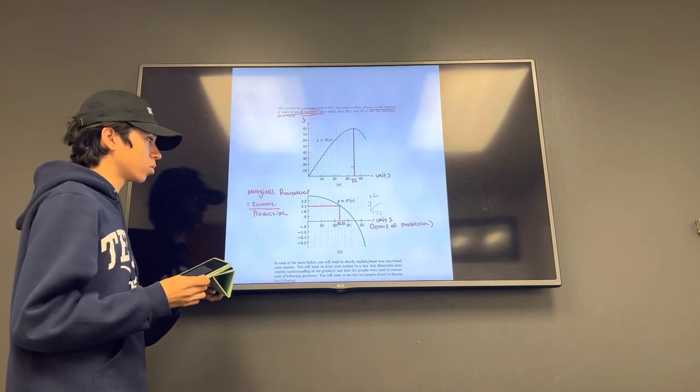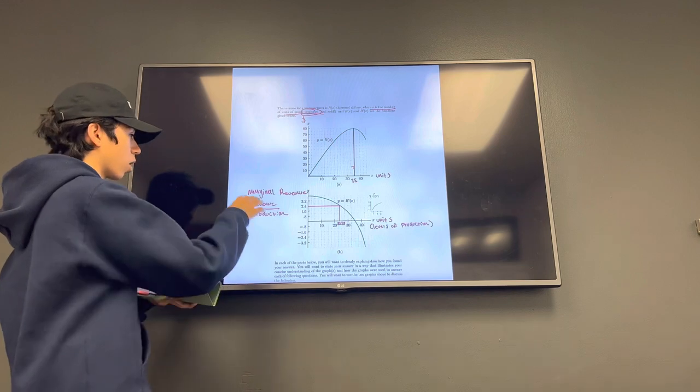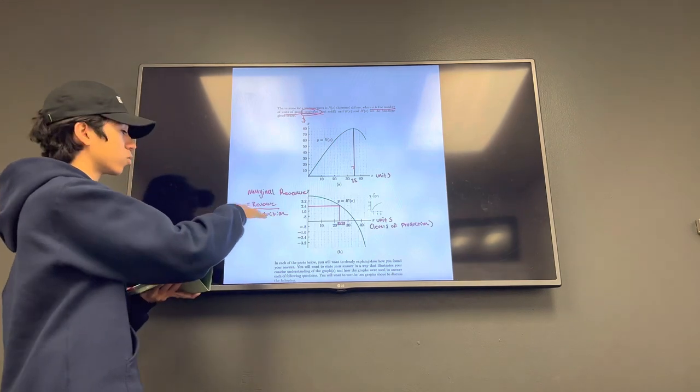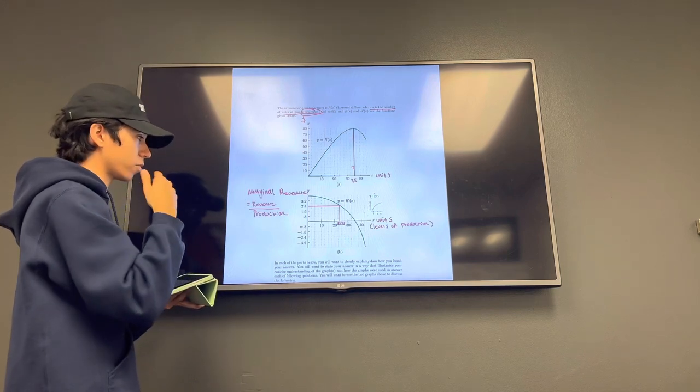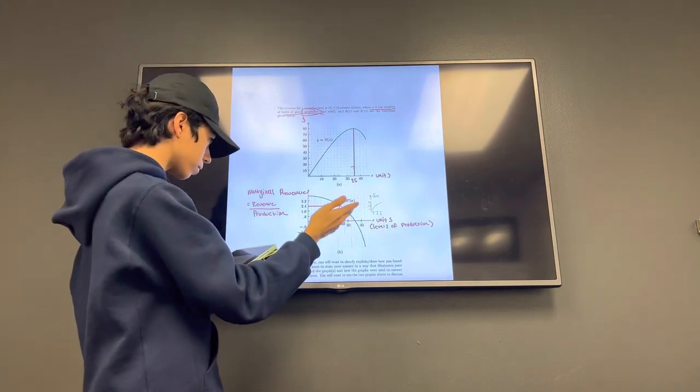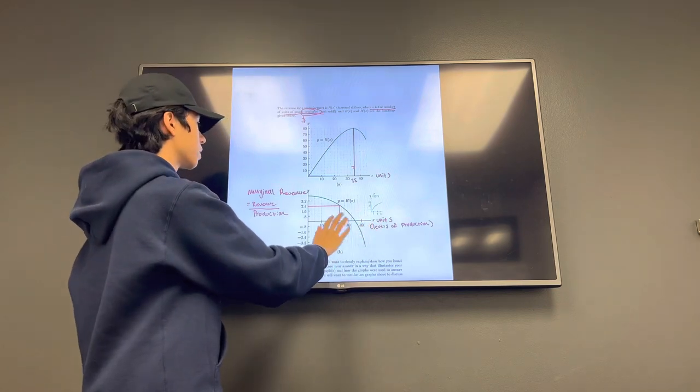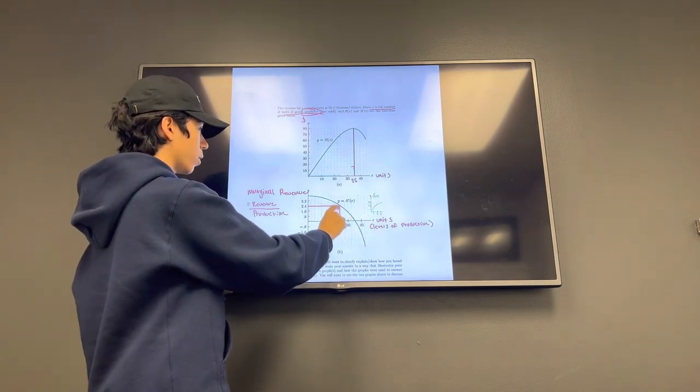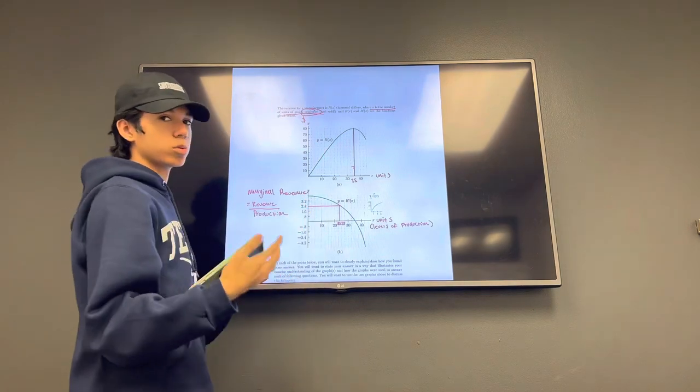To give some context, our marginal revenue is equal to our revenue over production, which is its relationship to the first graph. And here we can see, at a level of production of 23.75 units, we reach a marginal revenue of 2.4, which is equal to $2,400.